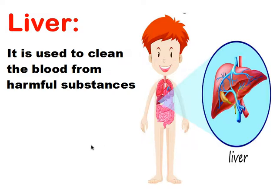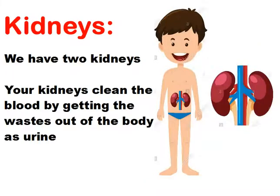Number three: the liver. The liver is a large organ in your body that helps to clean the blood from harmful substances called toxins. It helps to send those harmful substances outside the body.